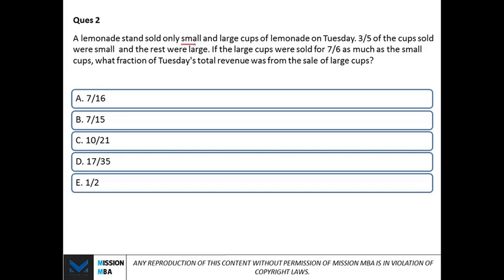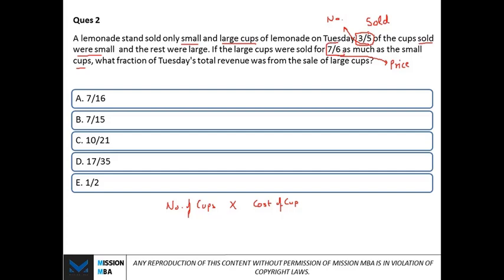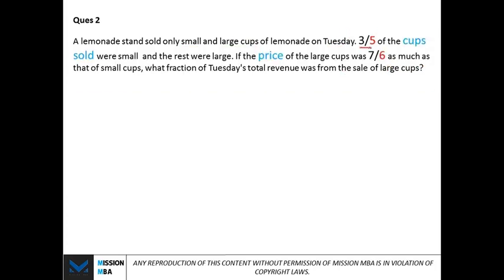A lemonade stand sold only small and large cups of lemonade. Three-fifths of the cups sold were small. The large cups were sold at seven-sixths as much as the small cups. What fraction of Tuesday's total revenue was from the sale of large cups? Revenue equals number of cups times cost per cup. The key fractions are three-fifths for quantity and seven-sixths for price — focus on the denominators five and six.